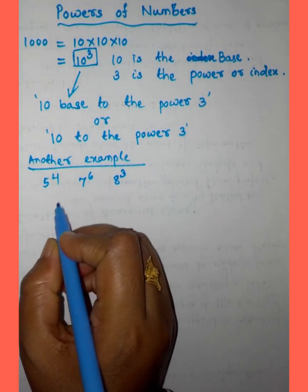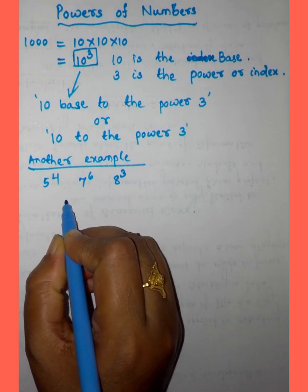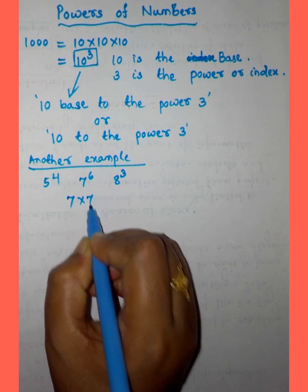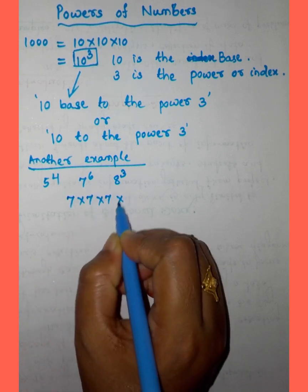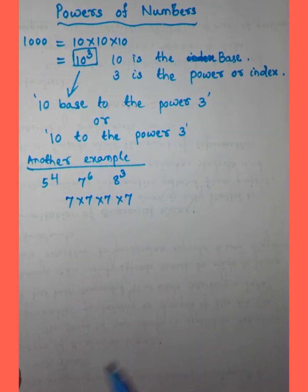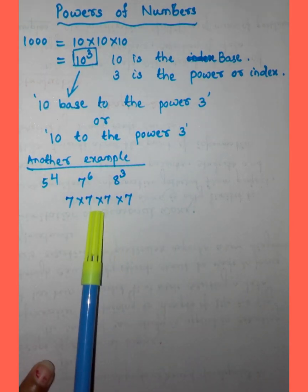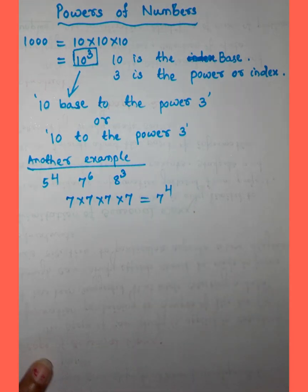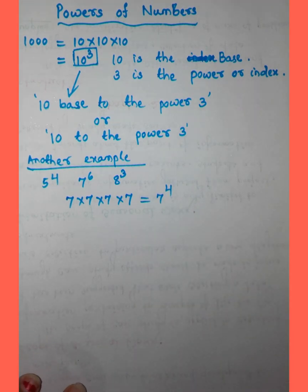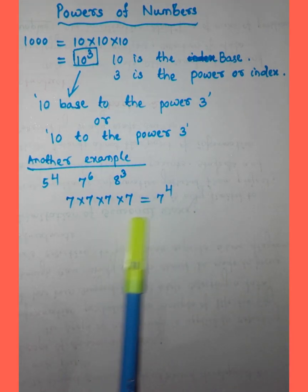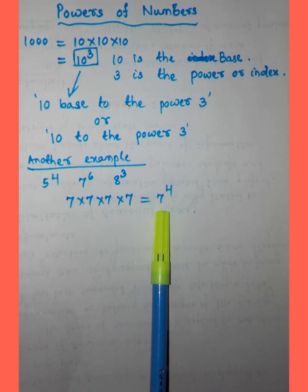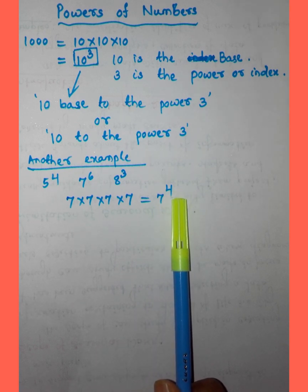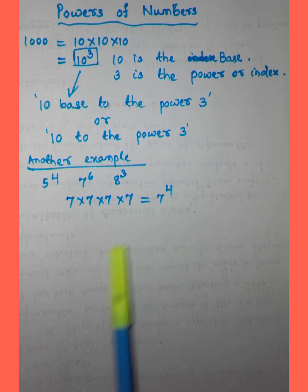Let us discuss another example. 7 into 7 into 7 into 7 into 7 — we can write this as 7 to the power 4. Here, 7 is the base and 4 is the power or index.